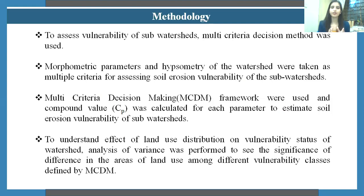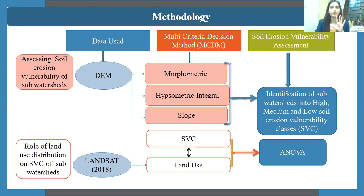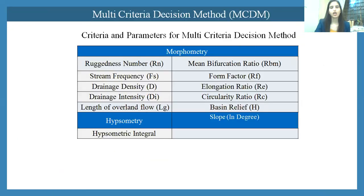For the second part, analysis of variance (ANOVA) was performed to see the significant difference in the area of land use among the different vulnerability classes defined in the first step by multi-criteria analysis. We used a DEM to calculate the parameters of morphometry, hypsometry, and slope, and Landsat images to understand land use distribution. The land use distribution was then analyzed by ANOVA against the soil erosion vulnerability classes defined in the first stage. These are the parameters under the morphometry and hypsometry sections used under the two criteria.